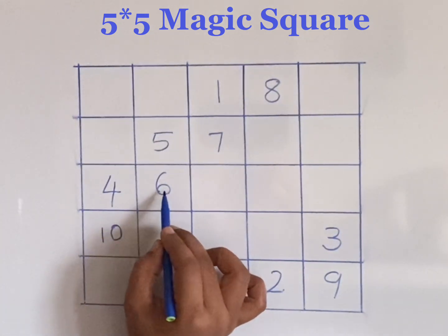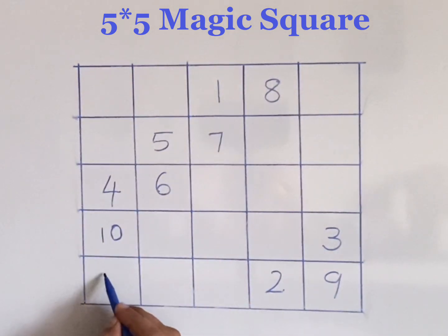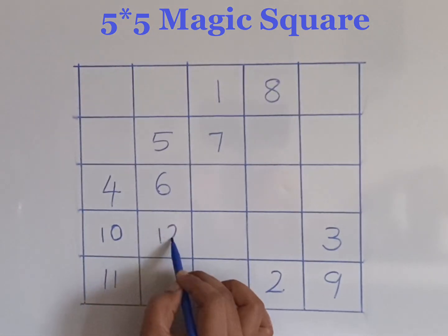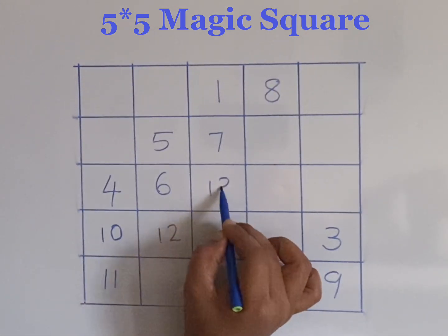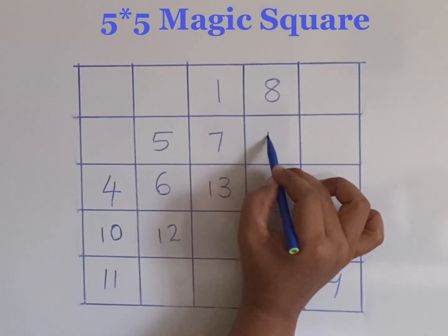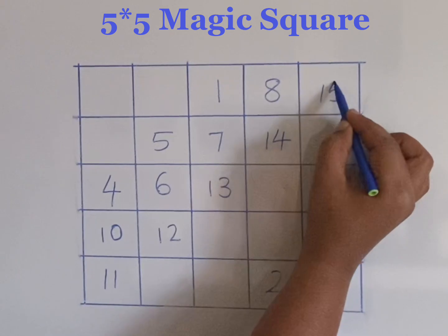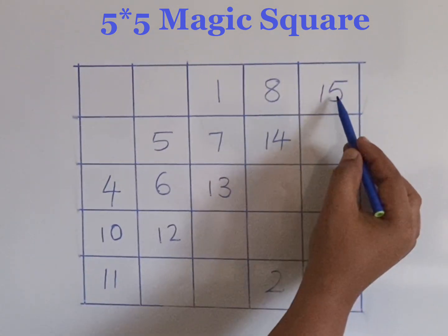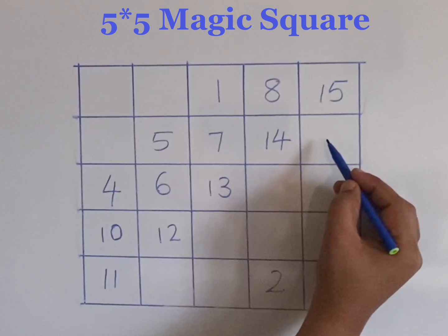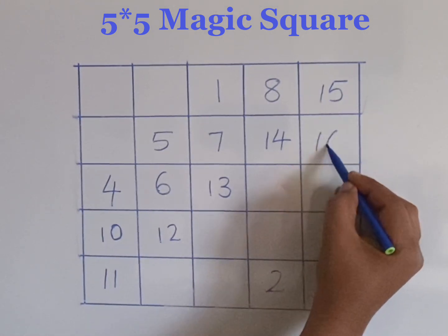The diagonal cell has already been filled so come to the cell below and fill it with number eleven. Now going diagonally as all the diagonal cells are vacant, filling numbers twelve, thirteen, fourteen, and fifteen. Now we are at the end of the main diagonal and according to rule five, come to the below cell and fill it with next number sixteen.